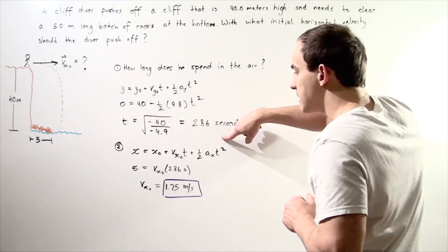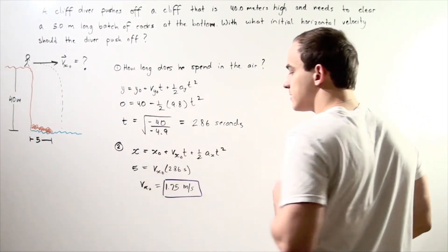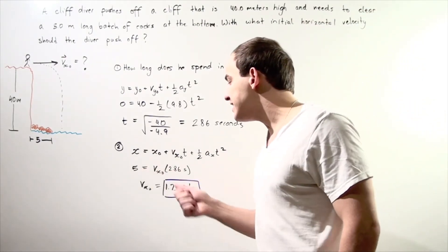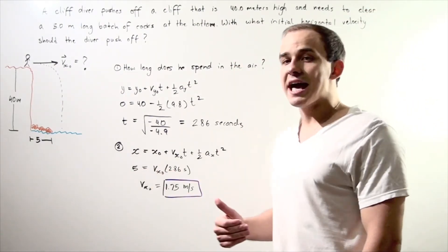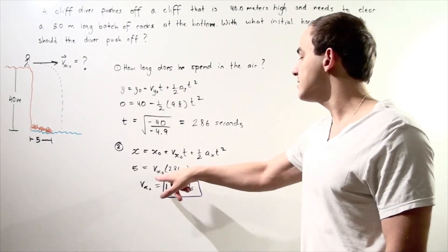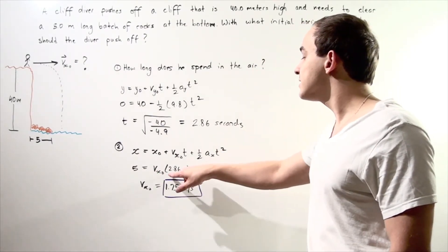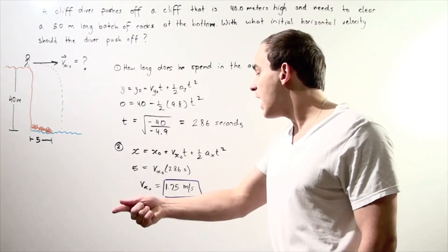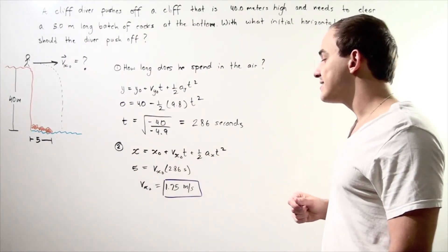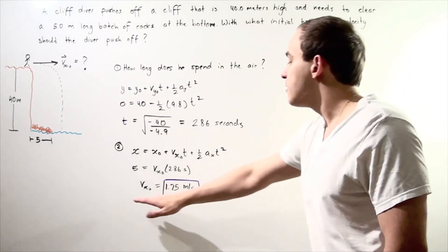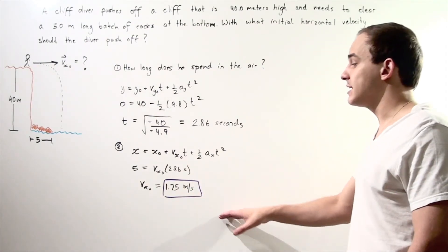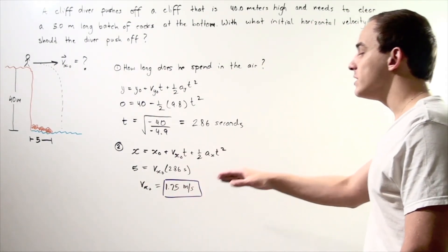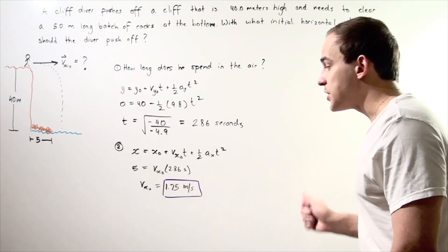This term cancels out. This term cancels out. And we're left with 5 meters equals our velocity along the x-axis, our horizontal velocity, multiplied by the time. We divide 5 by 2.86 seconds, and we get the following initial horizontal velocity, approximately 1.75 meters per second.